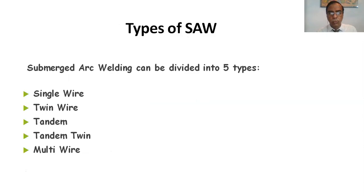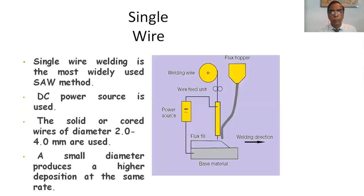Types of SAW. Submerged arc welding can be divided into five types: single wire, twin wire, tandem, tandem twin, and multi-wire. Single wire welding is the most widely used SAW method. DC power source is used. Solid or cored wire of diameter 2 to 4 millimeter are used. Smaller diameter produces a higher deposition at the same rate. This flux hopper wire feed unit and power source.